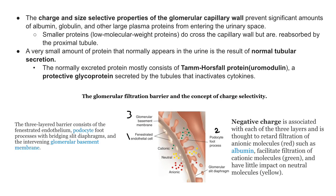The charge and size selective properties of the glomerular capillary wall prevent significant amounts of albumin, globulin, and other large plasma proteins from entering the urinary space. Smaller proteins of size 40 to 50 kilodaltons do cross the capillary walls but are reabsorbed by the proximal tubule. A very small amount of protein that normally appears in the urine results from normal tubular secretion and consists of Tamm-Horsfall protein, also called Uromodulin, a protective glycoprotein secreted by the tubules that inactivates cytokines.